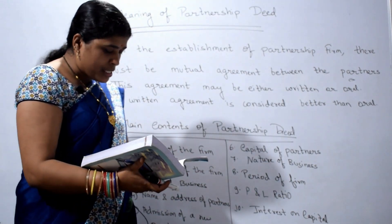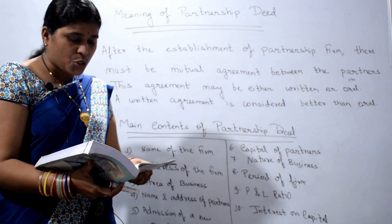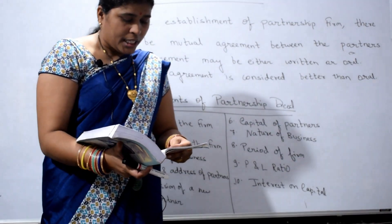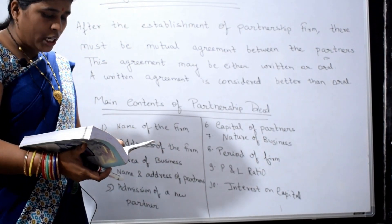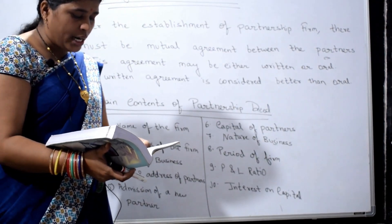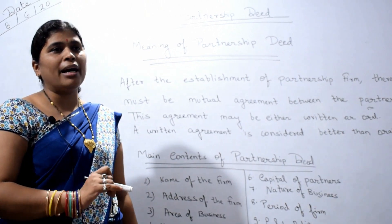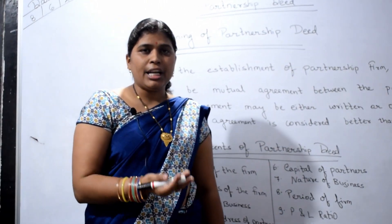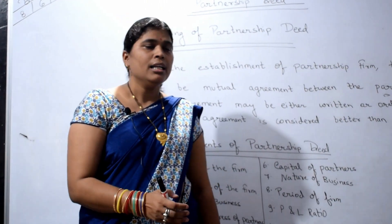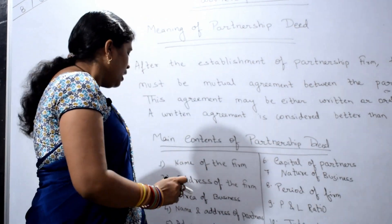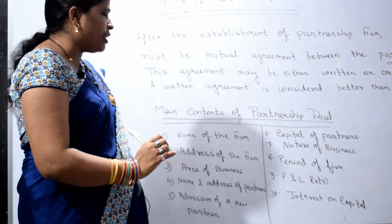Area of business — the partnership deed must mention the geographical area of business. The area of its business can be either local, provincial, national, or international. We will state whether our business is on the local, national, or international level.